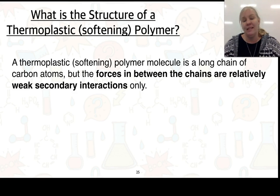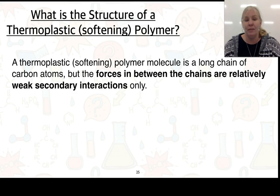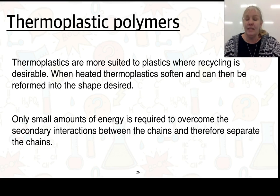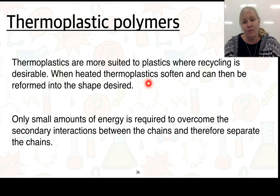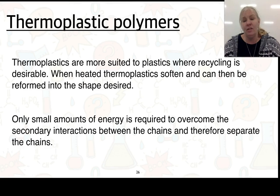The structure of a thermoplastic polymer is different — there are no cross-links. We have long chains of carbon atoms, but the forces between the chains are only weak secondary interactions. These are more suited to conditions where we want to recycle plastics. When heated, thermoplastics can soften and reform into a desired shape, as only small amounts of energy are required to overcome the secondary interactions and separate those chains.